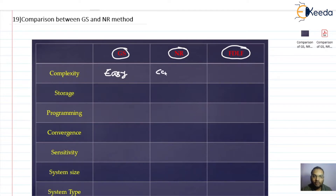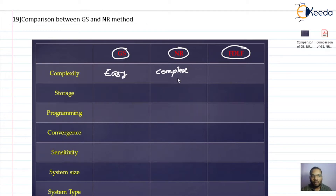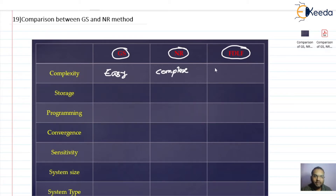The Newton-Raphson method is a complex method because the number of calculations is more. We need to compute the Jacobian and invert it in each iteration, and we must handle different types of buses in the system. The fast decoupled method simplifies Newton-Raphson with certain approximations, so it becomes less complex — not very easy, but less complex than Newton-Raphson.